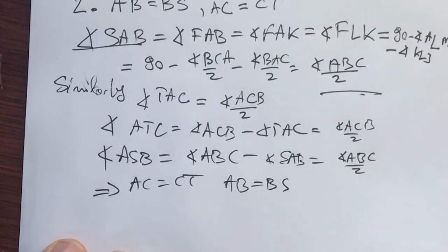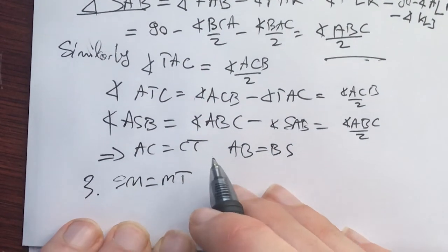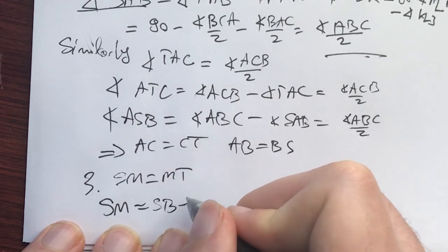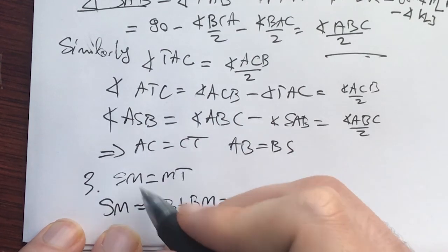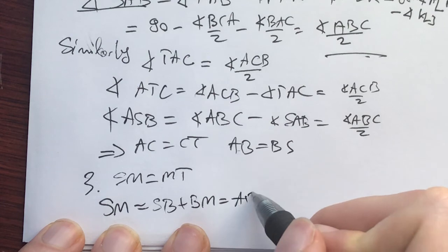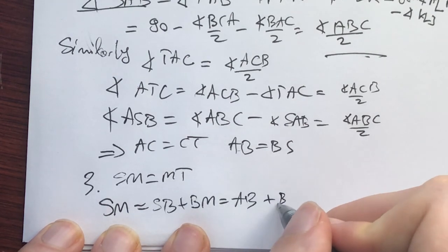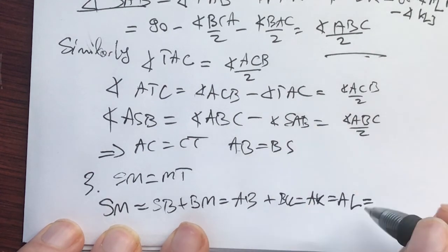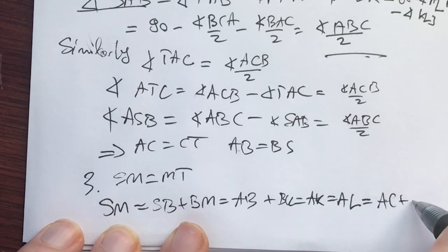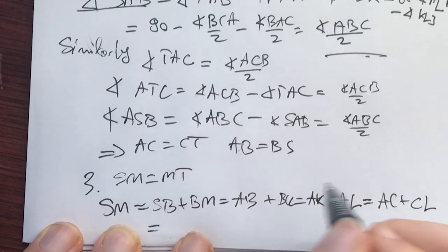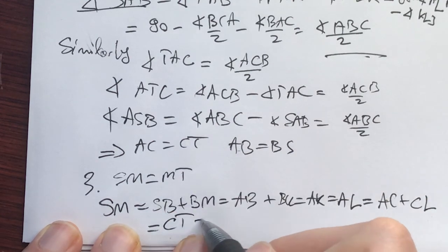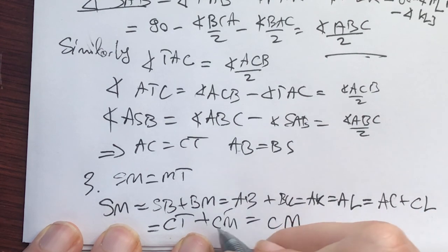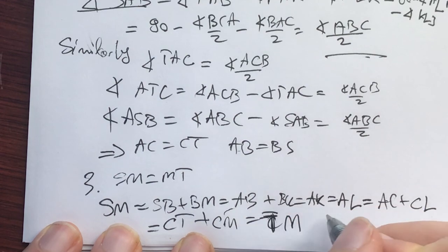And now finally, we prove that SM equals MT. And the way we do this is showing that SM is equal to SB plus BM is equal to, by this thing, AB plus, and BM is BK, which is equal to AK, which is equal to AL, which is equal to AC plus CL, which is equal to AC is equal to CT, CT plus CM, which is equal to TM. And with that, we are done.